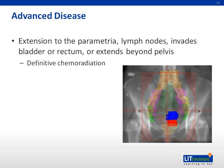Advanced stage disease is disease that has extended past the cervix or is greater than four centimeters in size. It can invade the lymph nodes, bladder, rectum, or extend beyond the pelvis. Advanced stage disease is treated with definitive chemoradiation, as it is beyond the stage of surgical resection. Additionally, advanced stage disease may require placement of percutaneous nephrostomy tubes if the ureters are obstructed, or colostomy if the rectum is obstructed.